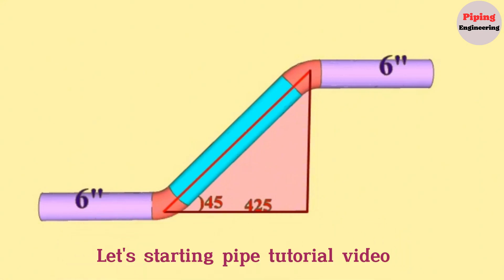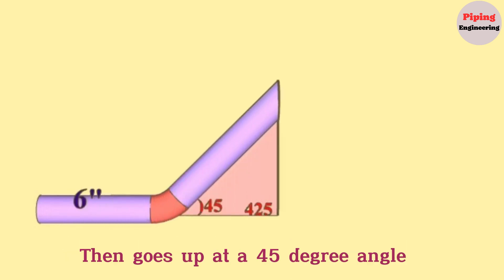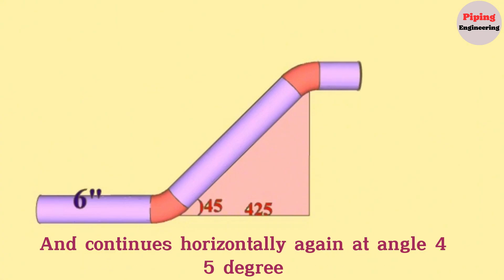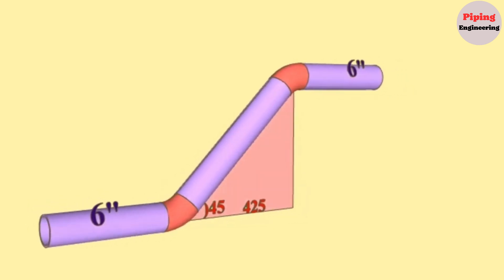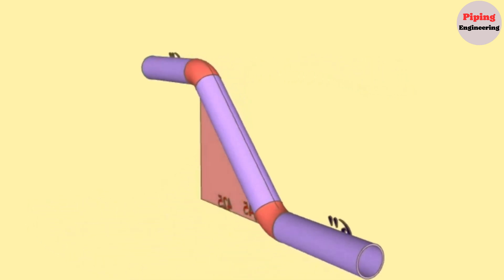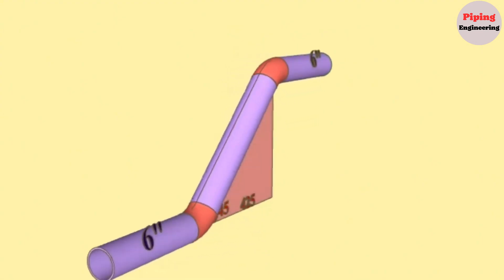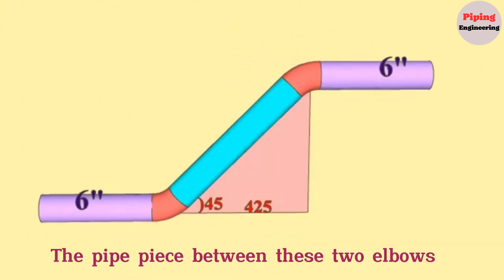Let's start the pipe tutorial video. As you see, the 6-inch pipeline comes horizontally, then goes up at a 45-degree angle and continues horizontally again at a 45-degree angle.